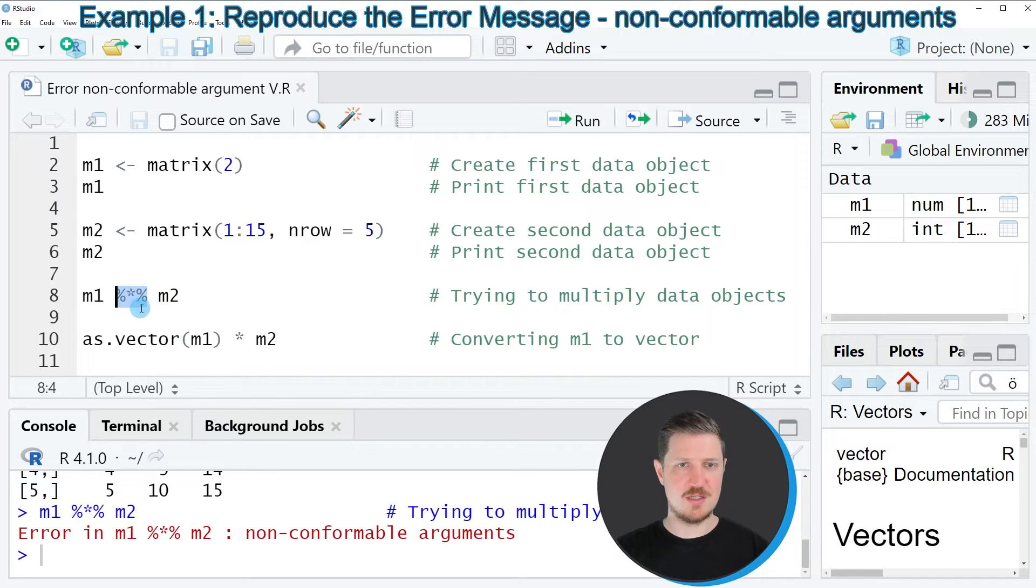The reason for that is that the multiplication operator that I have used in line 8 of the code cannot be used to multiply a single value in one matrix with multiple values in another matrix.